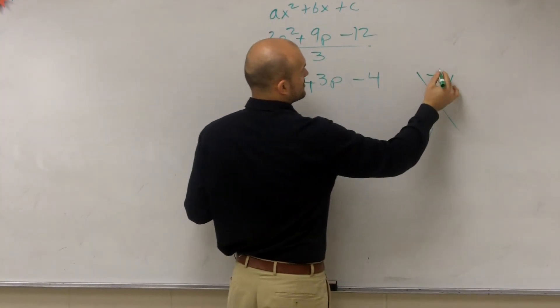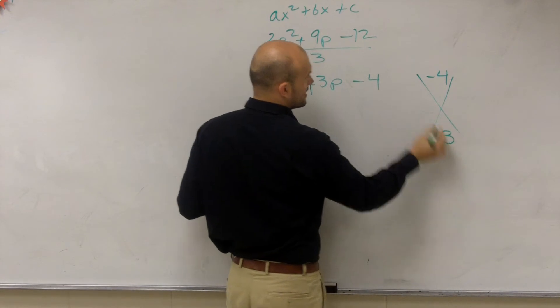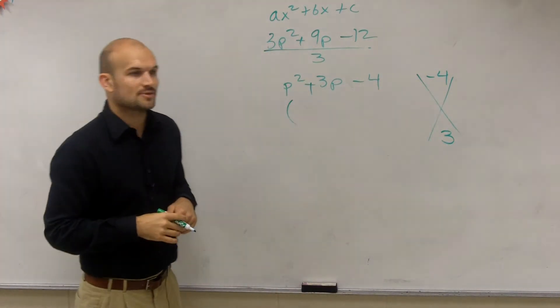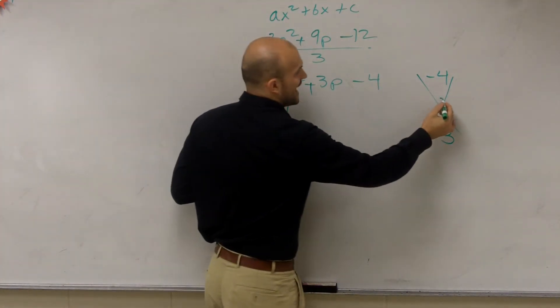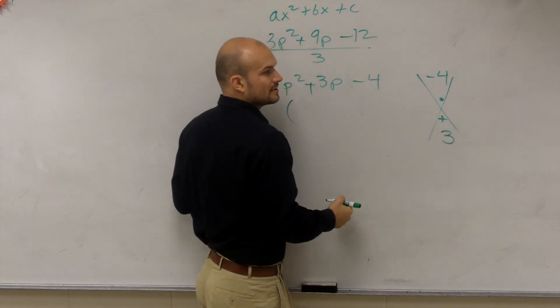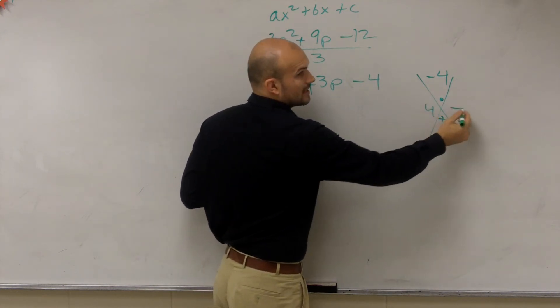remember we can do a times c, which is negative 4, my b is 3. What two numbers multiply to give you negative 4, but add to give you 3. And you can say positive 4 and negative 1.